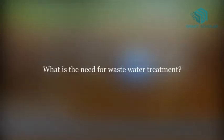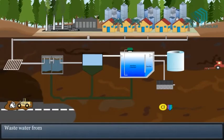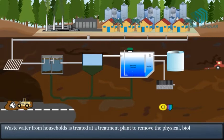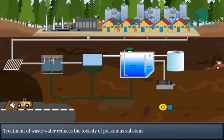What is the need for wastewater treatment? Wastewater from households is treated at a treatment plant to remove physical, biological and chemical matter. Treatment of wastewater reduces the toxicity of poisonous substances and pollutants in water resources.